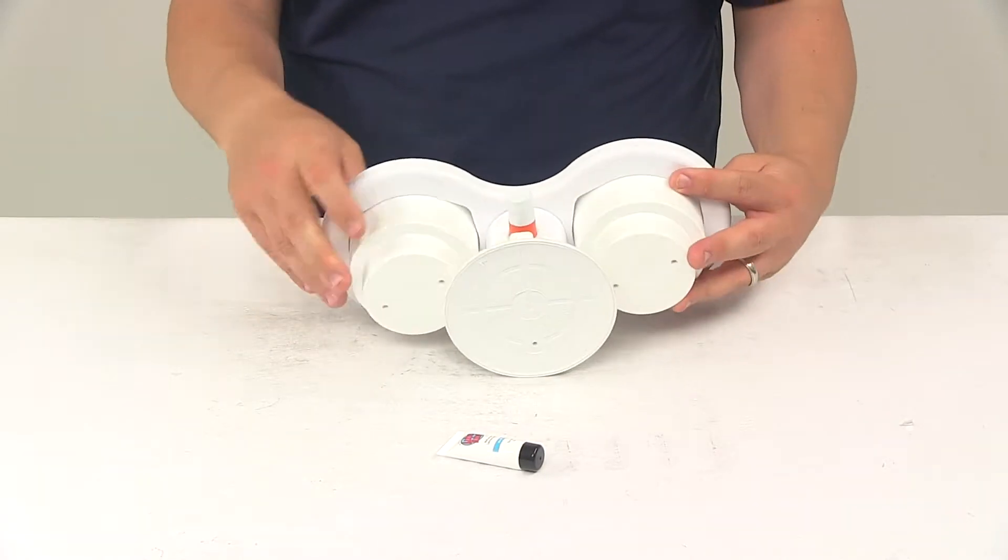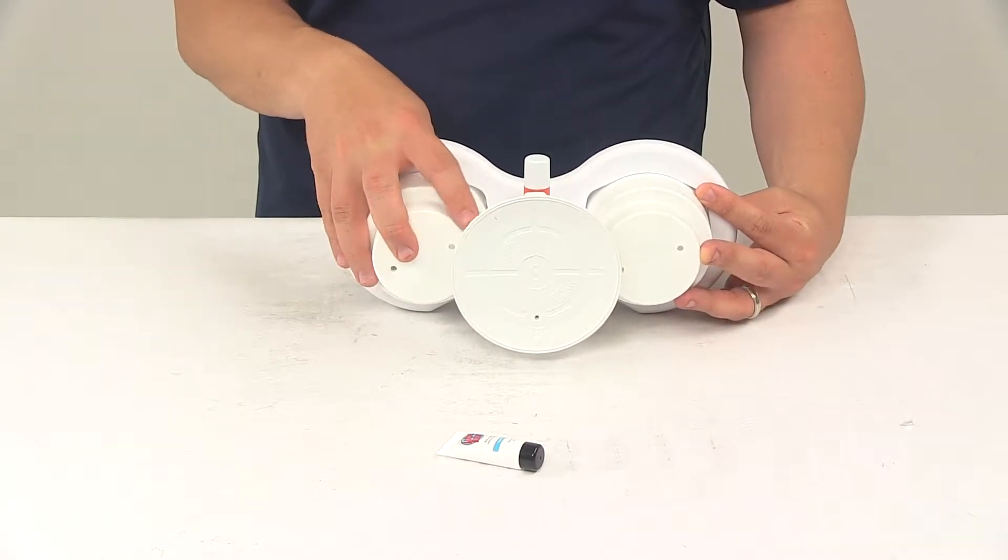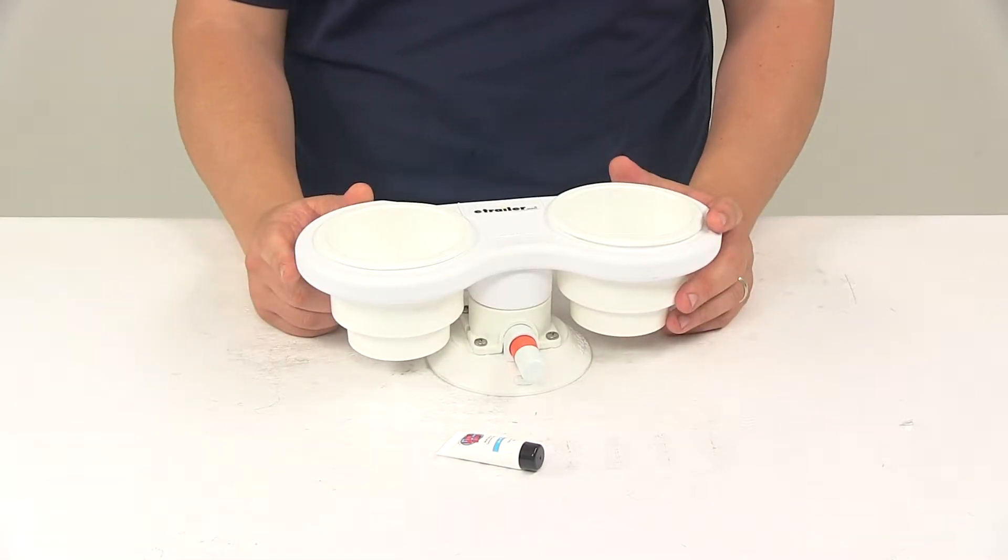It attaches with a powerful 4.5-inch vacuum mount. It's very easy to use and features a pull rating of 120 pounds. The unit's designed to install and remove quickly and easily.